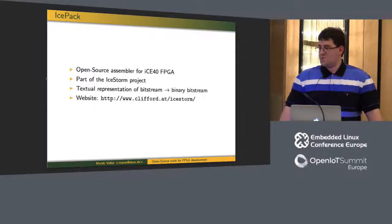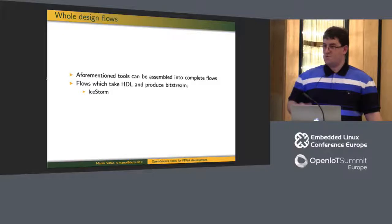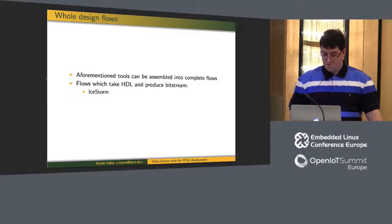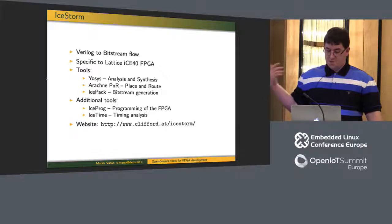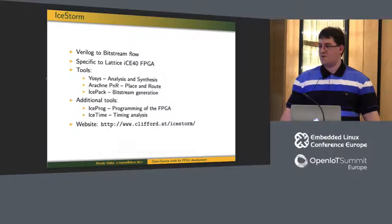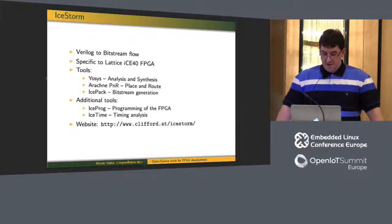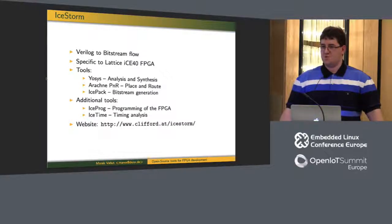icePack is specific to the iCE40 FPGA and is part of the IceStorm project. It takes the output from Arachne PNR — the textual representation of what goes into the iCE40 — and transcribes it into binary. There's also icePack's inverse, iceUnpack, also part of IceStorm. To summarize, IceStorm is the only complete open source flow for an FPGA: YoSys or Arachne PNR and icePack for analysis/synthesis, place and route, and bitstream generation. It also includes IceStorm programmers so you don't need Lattice tools at all, and even timing analysis support.